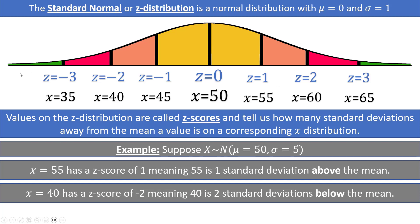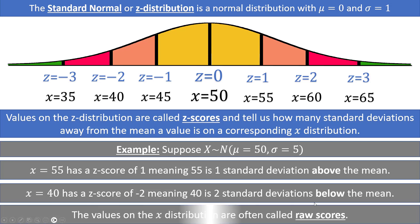We call values on the Z distribution Z scores, and we have a special name for values on the X distribution — these are called raw scores. A Z score represents how many standard deviations away from the mean a value is. The raw score, or X value, represents a value in terms of the units of your problem, such as weight, height, distance, or whatever variable you are dealing with.